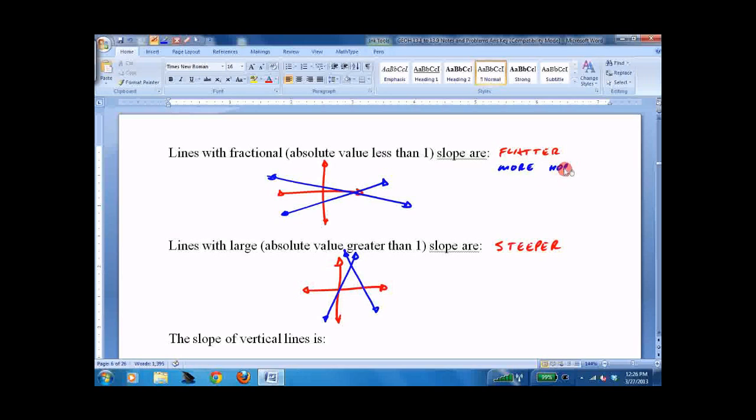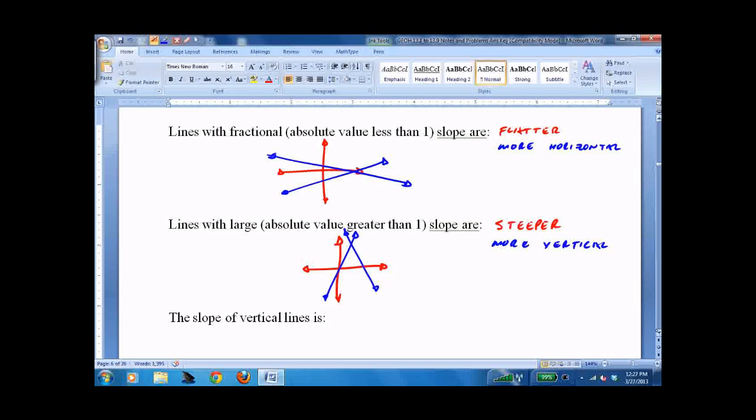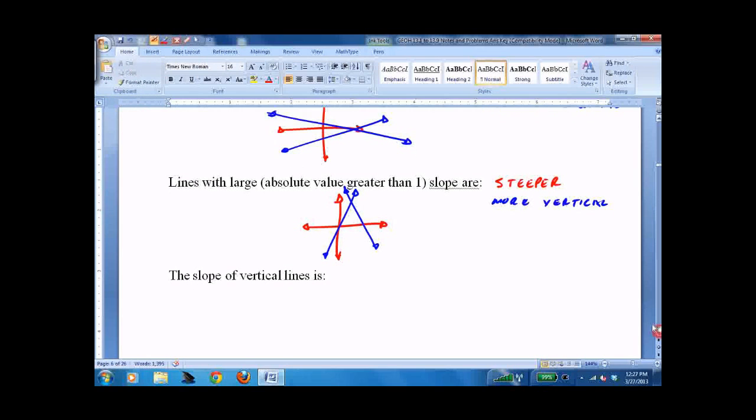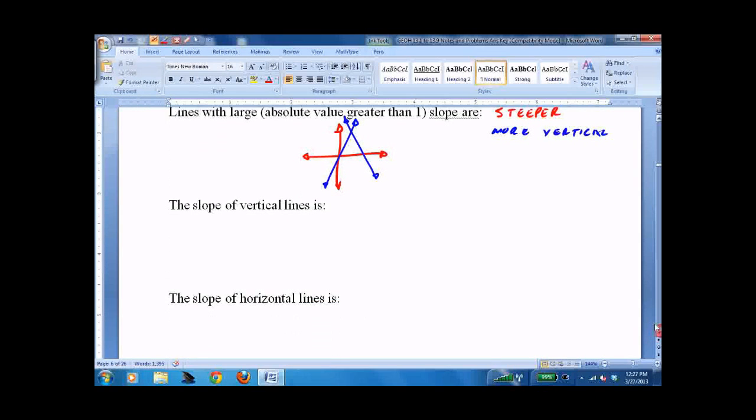And again, you should be checking. There's a positive slope up to the right, great. It's a fraction. It's 1 third, 1 half, 1 fifth. It should be a little flatter. Oh, it's 7 or 8, 9.6. It should be more vertical. Always check when you're done.